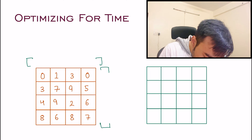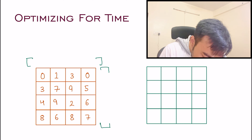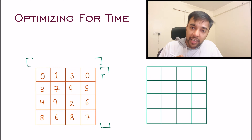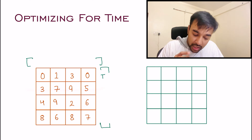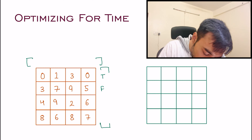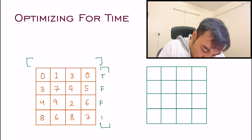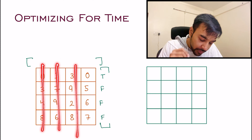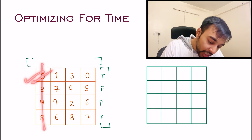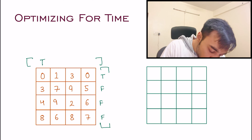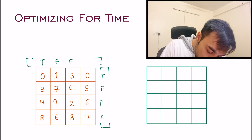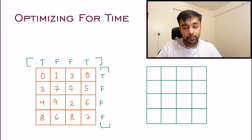You take two arrays to store all intermediate results. Traverse through the first row — if you see a zero, mark it as true. Move to the next row, no zero found, mark it false. Similarly for the third and fourth rows. Then do the same for each column: first column has a zero so mark true, second column no zero so mark false, third column no zero, fourth column has a zero so mark true.